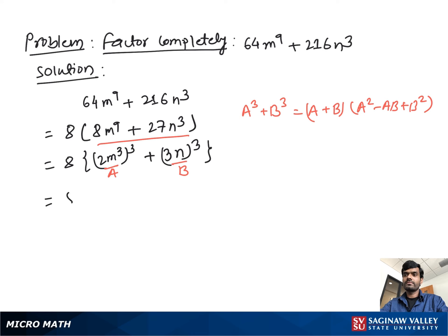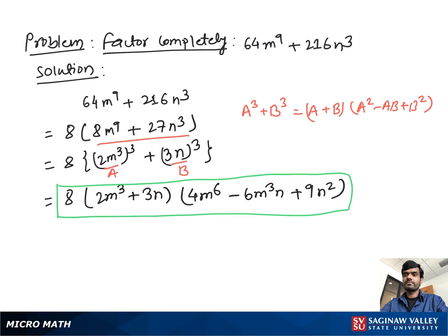You can write (2m^3 + 3n)(4m^6 - 6m^3n + 9n^2). Now you cannot further simplify this, so this is our final complete factorization.